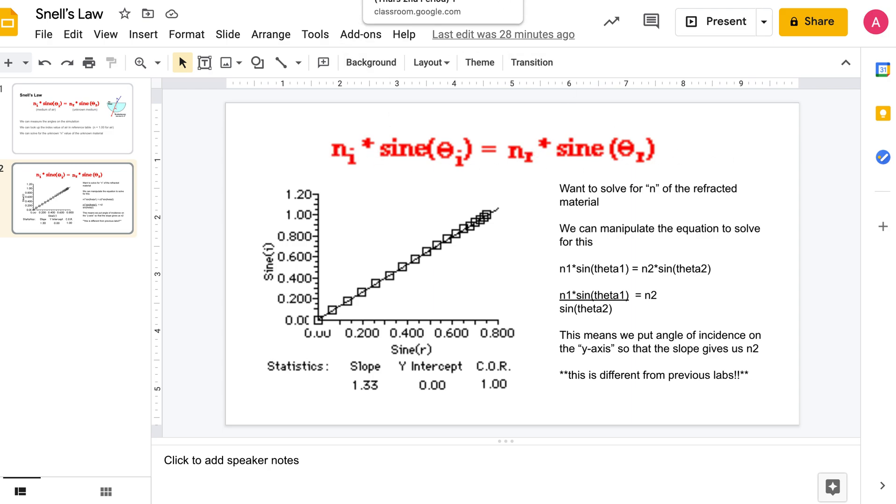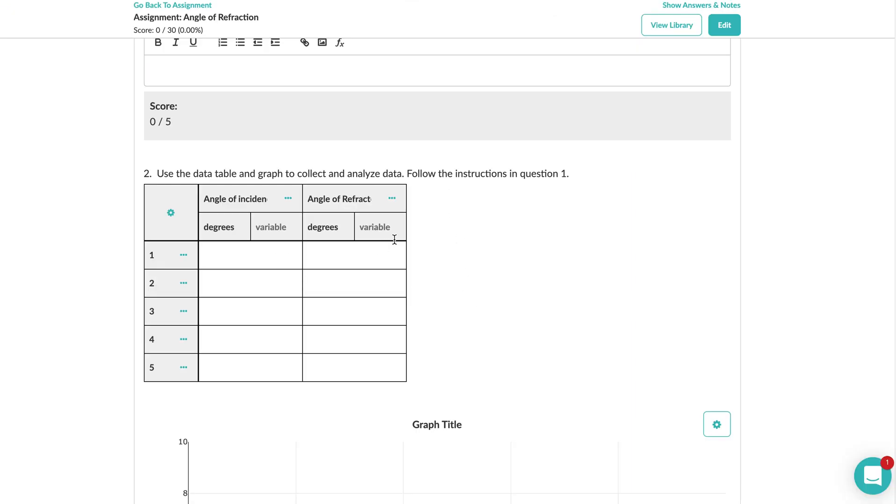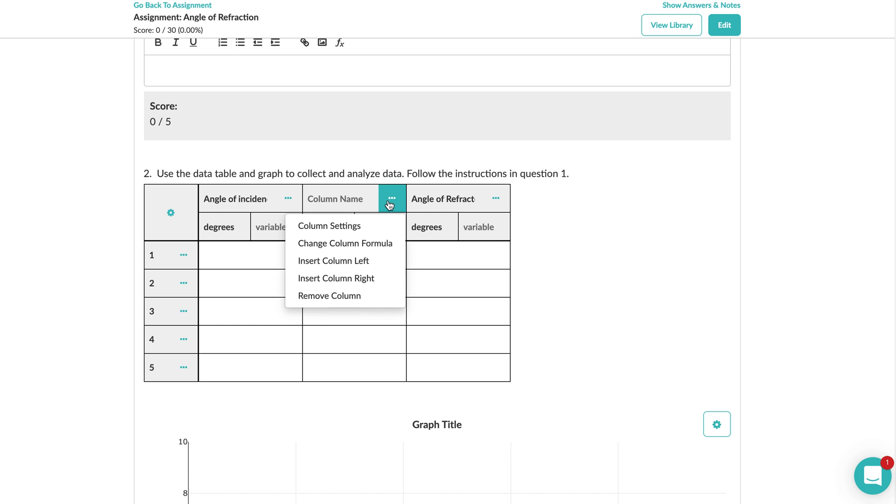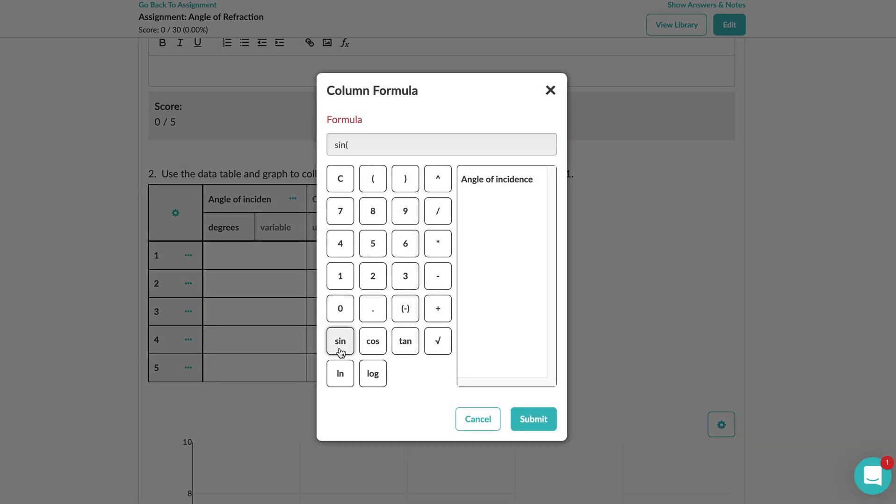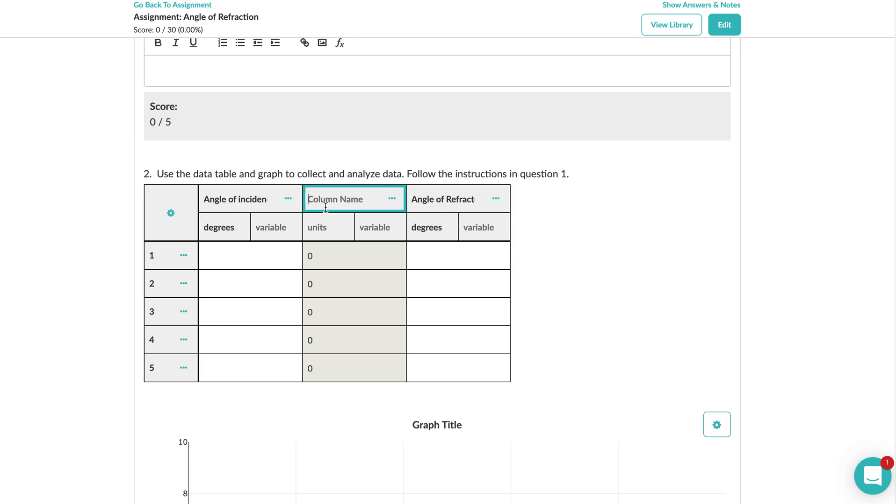Remember from that equation, Snell's law, n₁ sine θ equals n₂ sine θ₂, or in this case they call it i and r. For your pivot simulation you're going to insert a column to the right and you need to take the sine of it. You're going to change the column formula, you're going to say sine of the angle of incidence, and boom that's going to calculate that for you. You can call this sine of angle of incidence. There's no units with that.